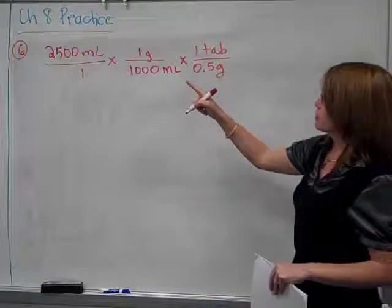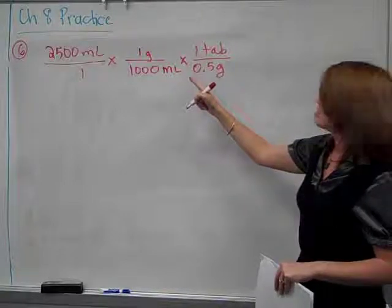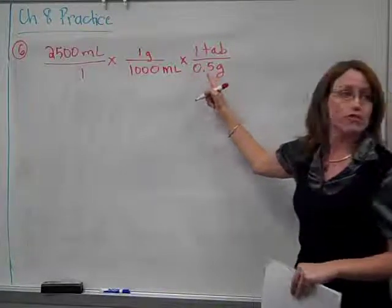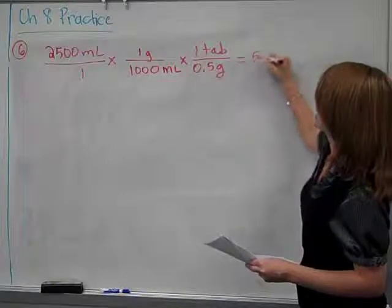And so, in your calculator, you can do 2,500 divide by 1,000 divide by 0.5. And you end up with five tablets.